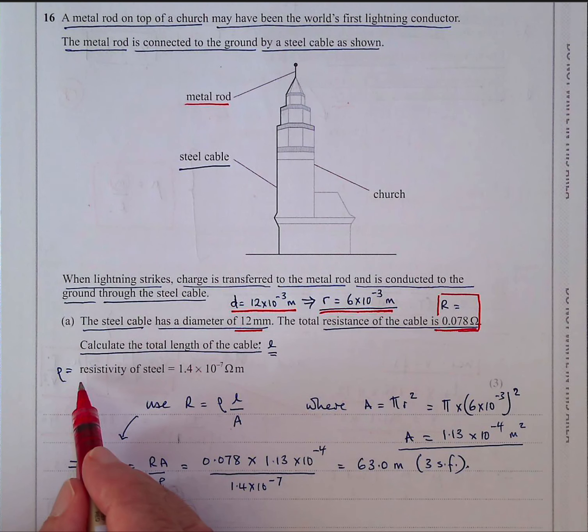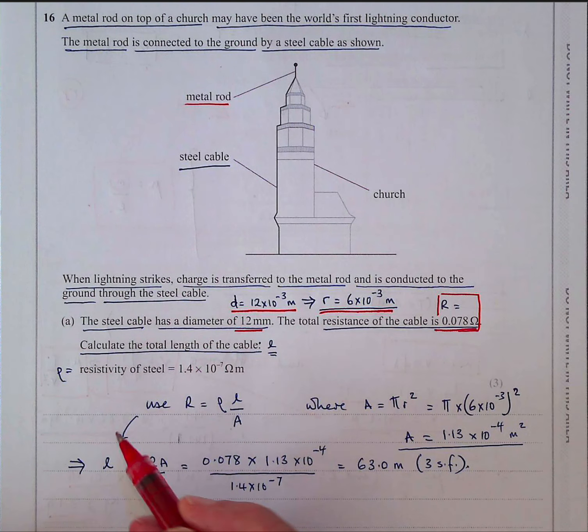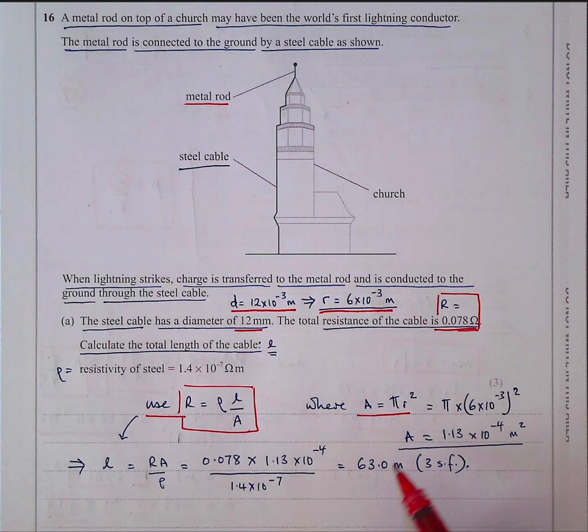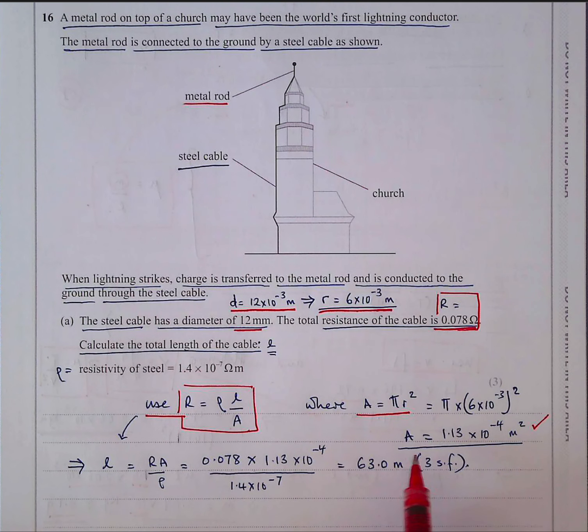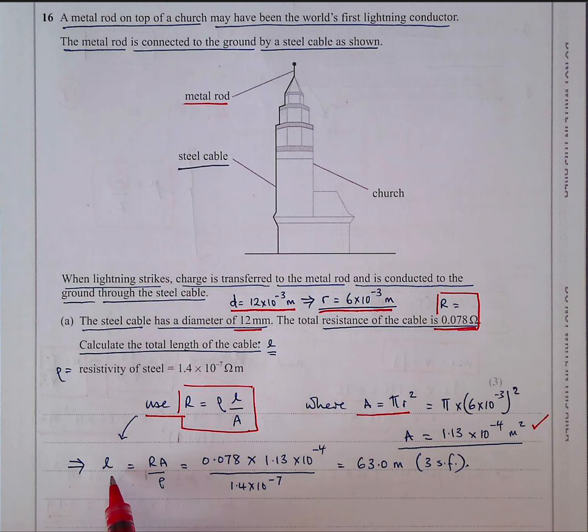We want to find L. They've given us the resistivity of the steel, so as soon as you hear resistivity, you know they want you to use R = ρL/A, where A = πr². One mark for working out the area. We then rearrange to L = RA/ρ. Putting the values in gives 63.0 metres to three significant figures.